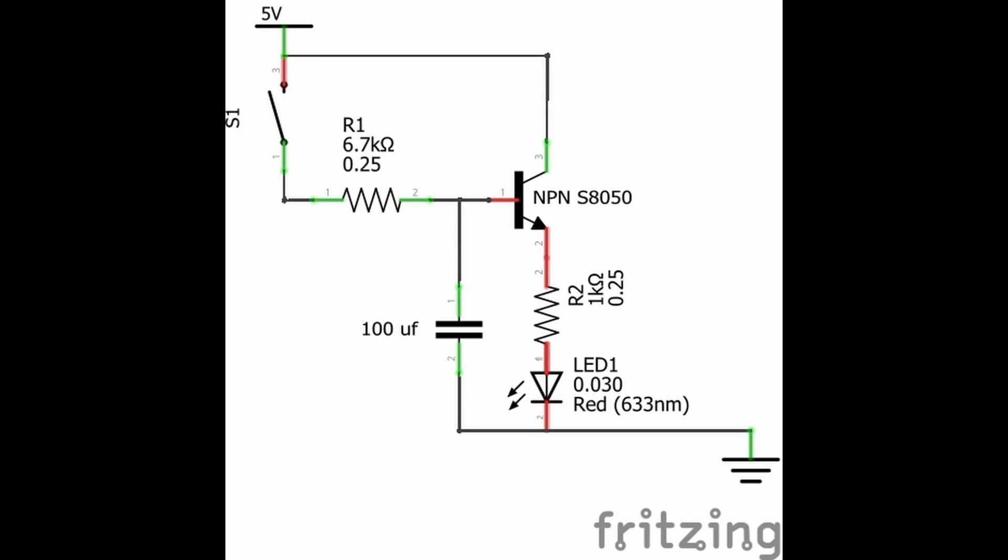Now the capacitor begins to discharge through the transistor and the 1K resistor. The base emitter junction of the transistor has a very high resistance, so the discharge time is much greater than what would be expected of the 1K resistor and 100 microfarad capacitor alone. In this case, instead of a time delay of 0.1 seconds, it takes around 60 seconds for the LED to dim to complete dark. I've edited the time in this video for this reason.